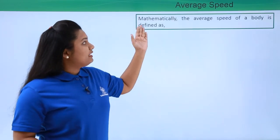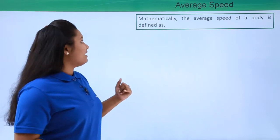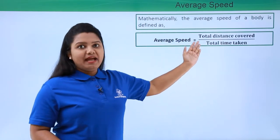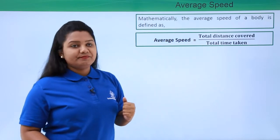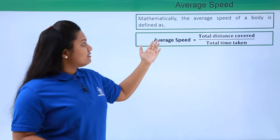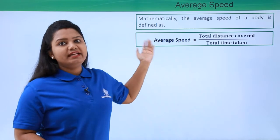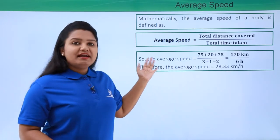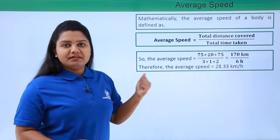Now the average speed is mathematically represented as total distance covered divided by total time taken. Now this is a formula of finding out the average speed of the car or any object. Now let's find out the average speed of the car that we have seen before.